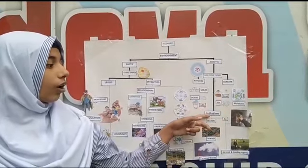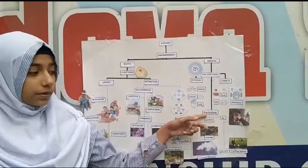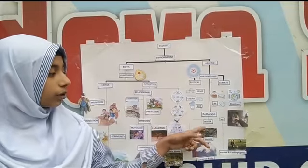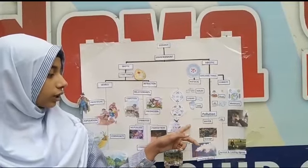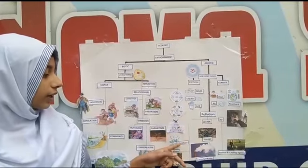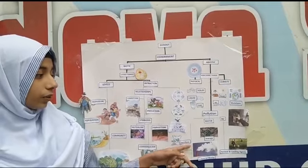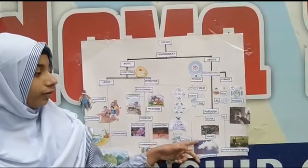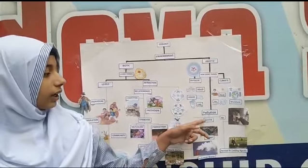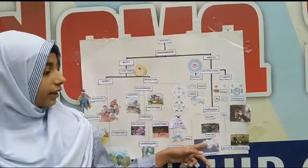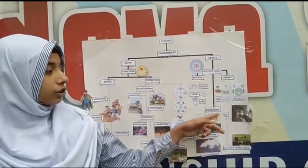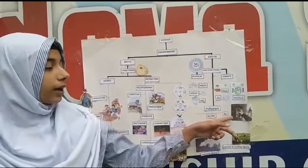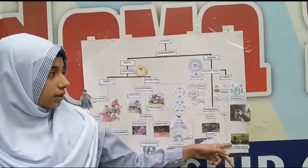Pollution contains three types: land pollution, water pollution, and air pollution. Land pollution contains fertilizer, waste dumps, and industrial waste. Water pollution contains sea discharge and industrial waste. Air pollution contains burning of fossil fuels and aerosols. Thank you.